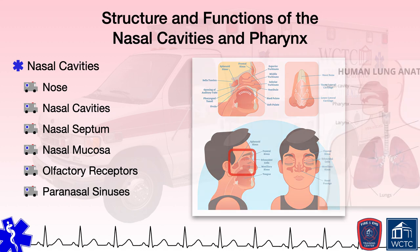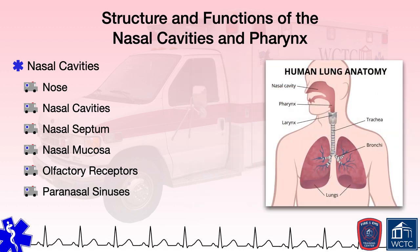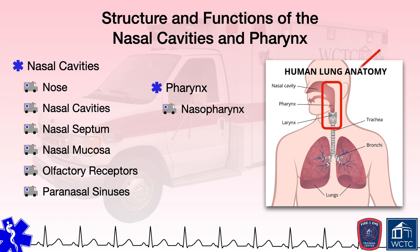The area behind the nasal and oral cavities is referred to as the pharynx. The pharynx is separated into three different areas: the nasopharynx, the oropharynx, and the laryngopharynx. The nasopharynx is the area posterior to the nasal cavity that extends inferiorly to the level of the soft palate. The soft palate is the roof of the mouth, which separates the nasal cavity from the oral cavity. There is a hard palate toward the anterior that is structurally supported by bone, the maxillary bone in particular.